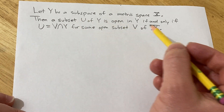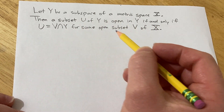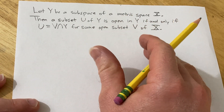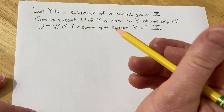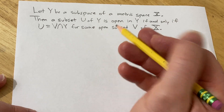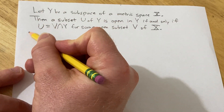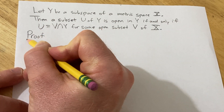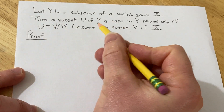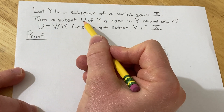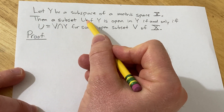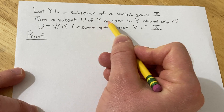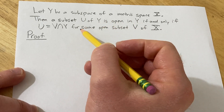Let's go ahead and go through the entire proof very carefully. I'm going to try to include as much detail as I can, so hopefully this helps you. So, proof. First we have to talk about what it means for a subset U of Y to be open in Y.